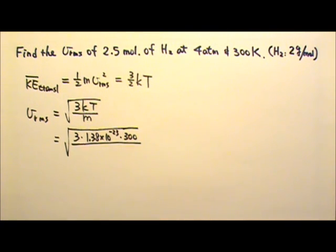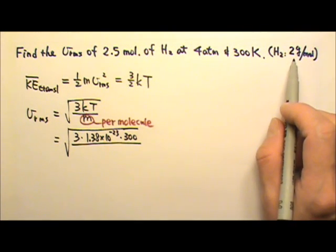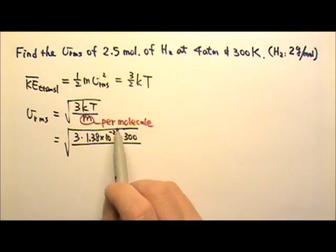Now this mass here is the mass per molecule. So we have to use the molar mass divided by the Avogadro's number to get the mass per molecule.